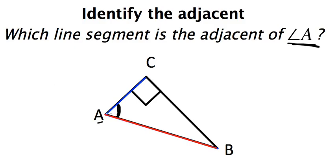So that leaves this one right here that I'll put in green. That is what we call our adjacent side. So for this one, line segment AC is adjacent to angle A.